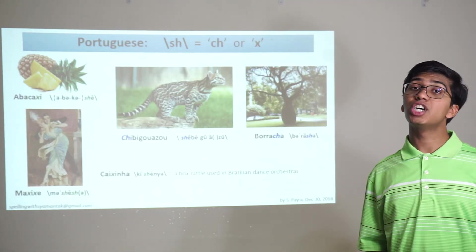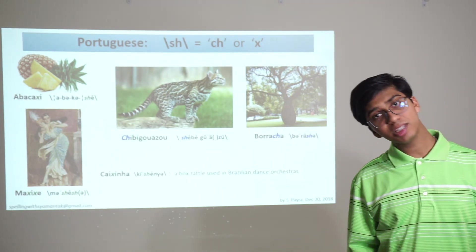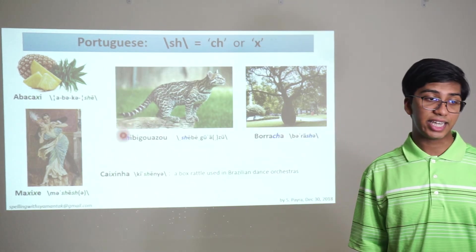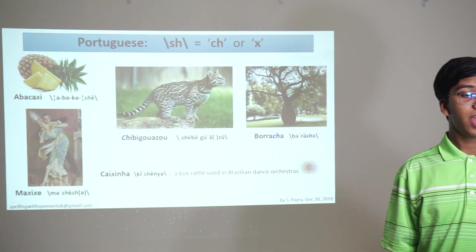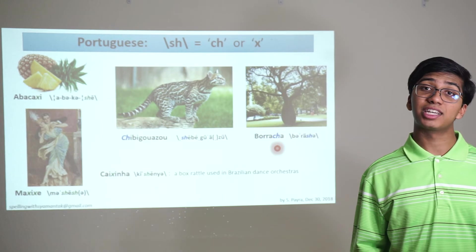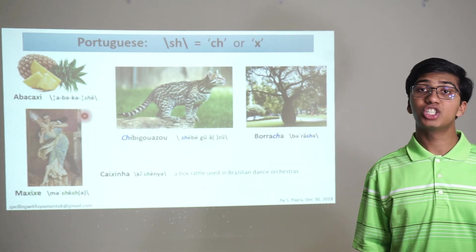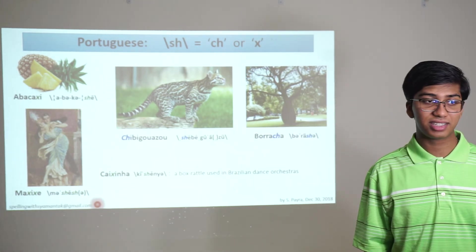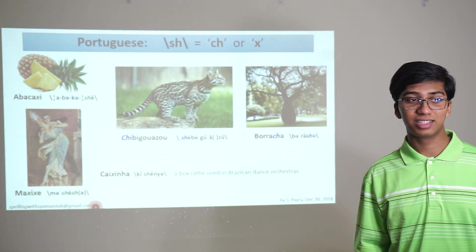When instead of a Z sound you have a SH sound, that can be spelled occasionally with a CH and occasionally with an X. So the SH is in words like xibiguaçu — this predator — and barracha, any of several Brazilian latex-producing trees. In other cases you have abacaxi — like this pineapple — and maxixe, a Brazilian ballroom dance. This last one even has two X's that make the SH sound.